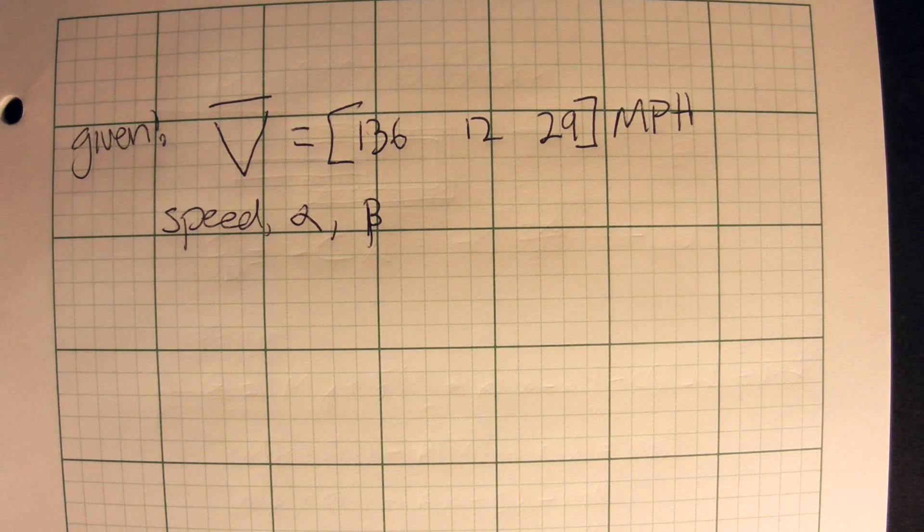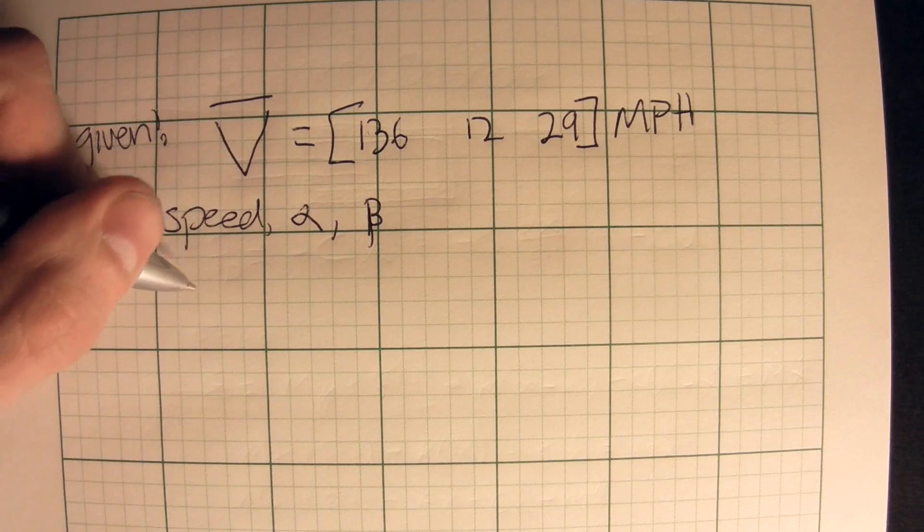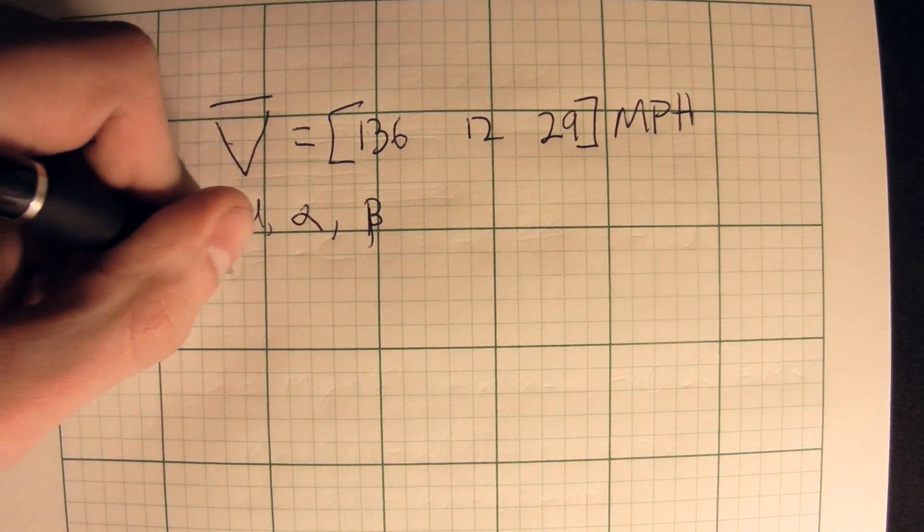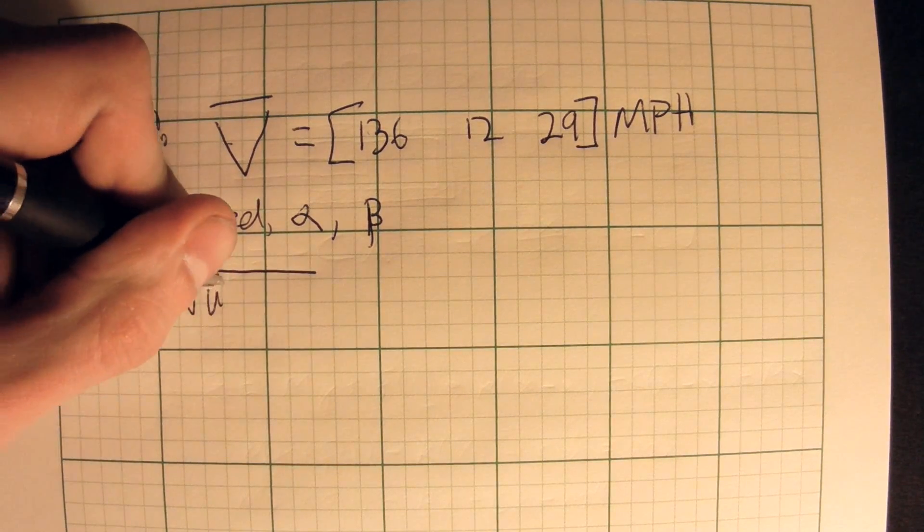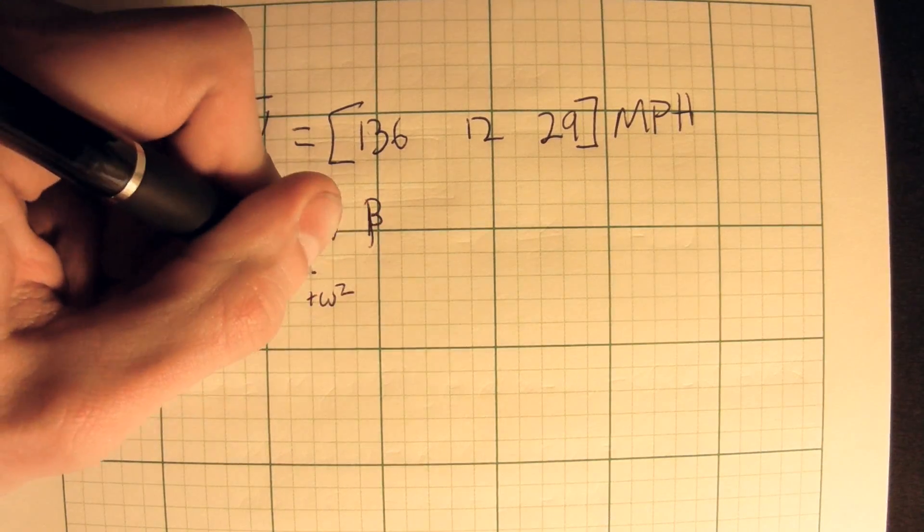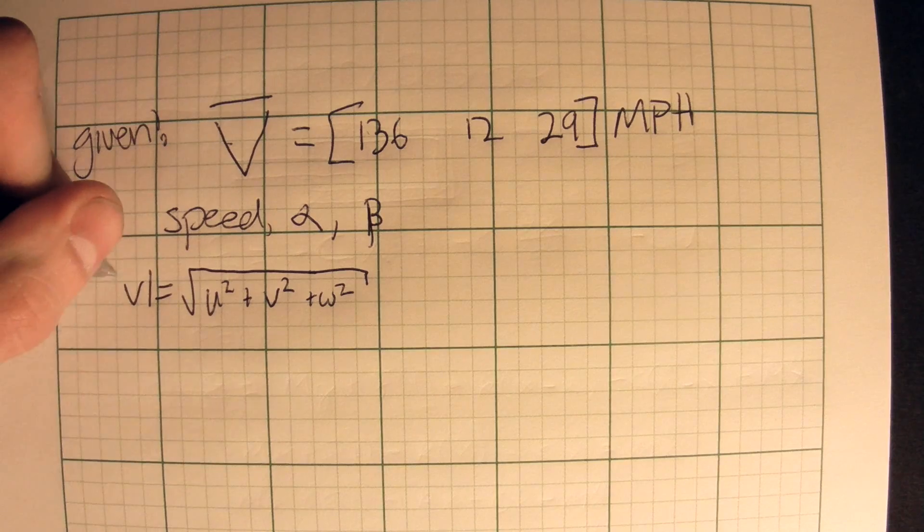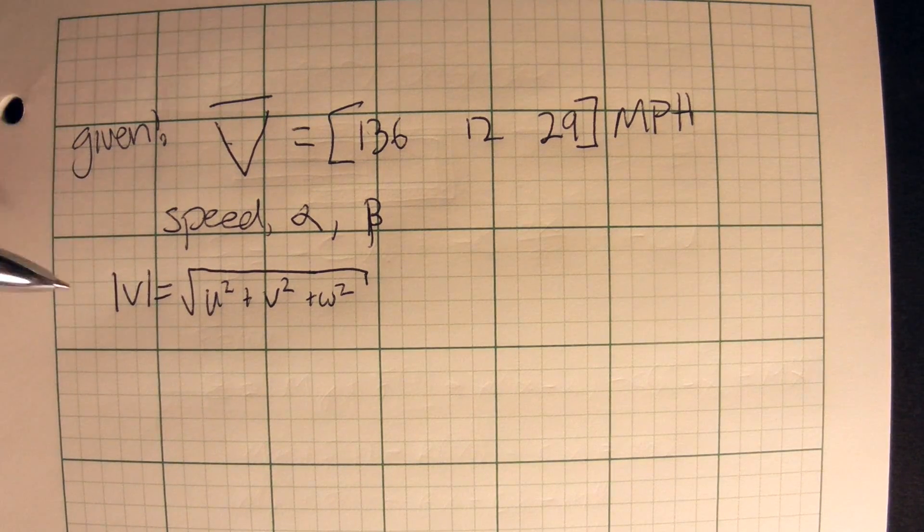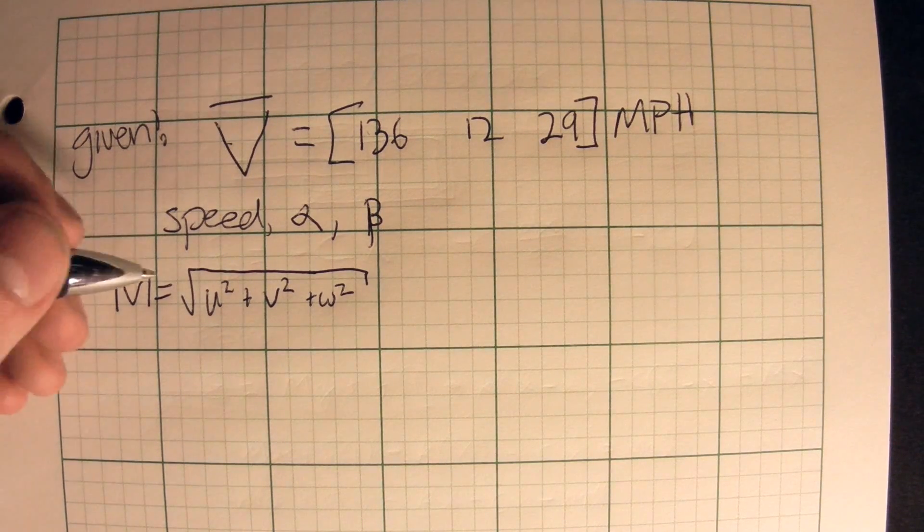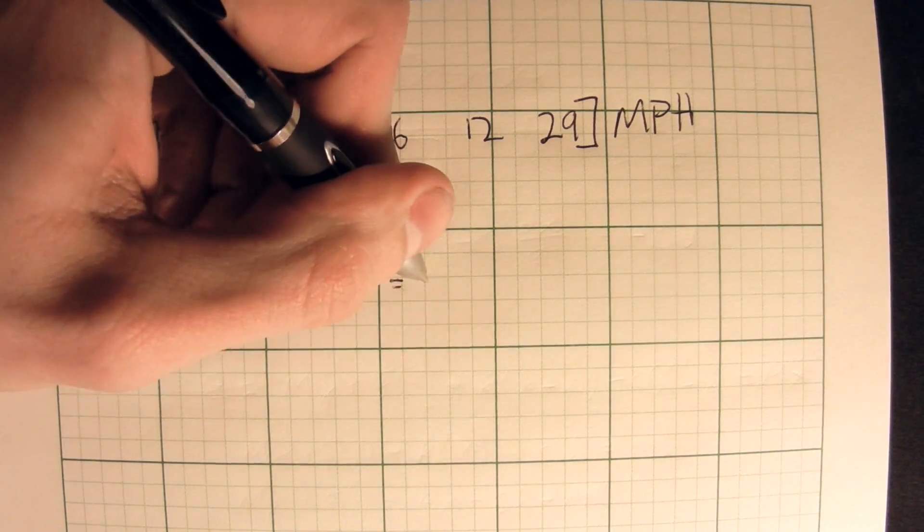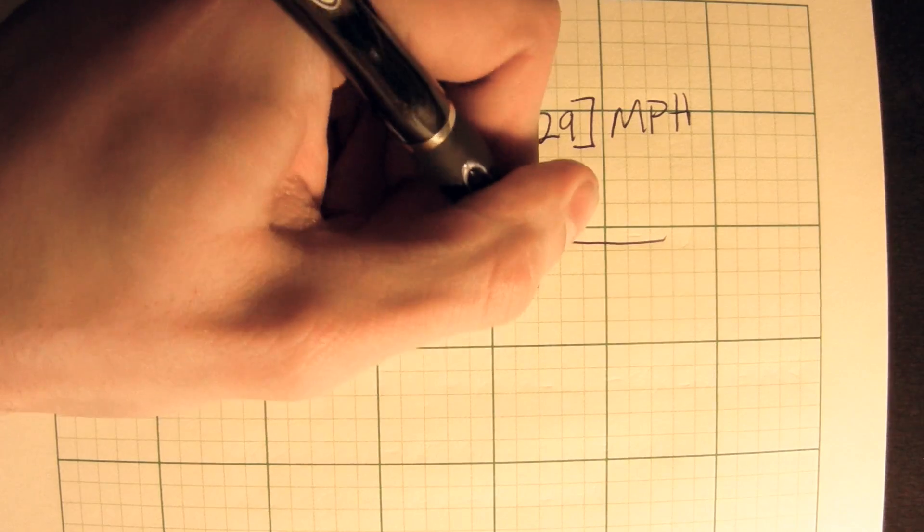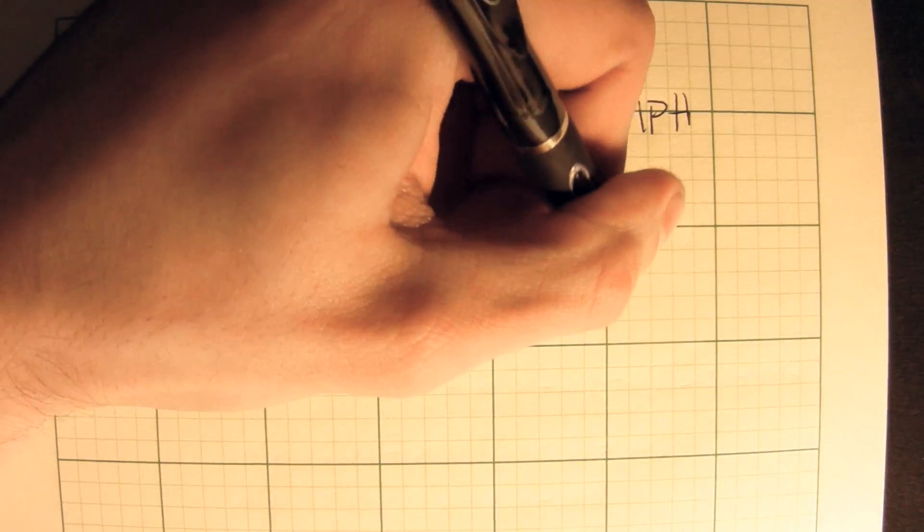I don't know if I covered exactly how to find the speed before, but it's just a basic application of the magnitude of the vector. So the magnitude of the vector goes in a form like this. We have u squared plus v squared plus w squared. It's a square root that is equal to v. And you can apply that for any number of numbers inside of your vector. So let's write that out.